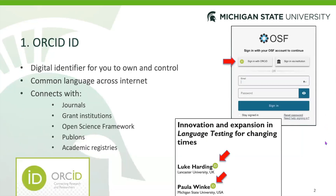So, ORCID IDs — what are they? One of the problems in academia is that there are a lot of names that are very similar or the same across publications and across many different fields, and it's become quite difficult to keep track of who is who. If you see a citation of Smith 2020, which Smith is that? ORCID is a platform that gives researchers a very specific number — kind of like a national identification number or a social security number — so that it can be associated with academic manuscripts and other digital platforms. Think of it as a common language we use across the internet.